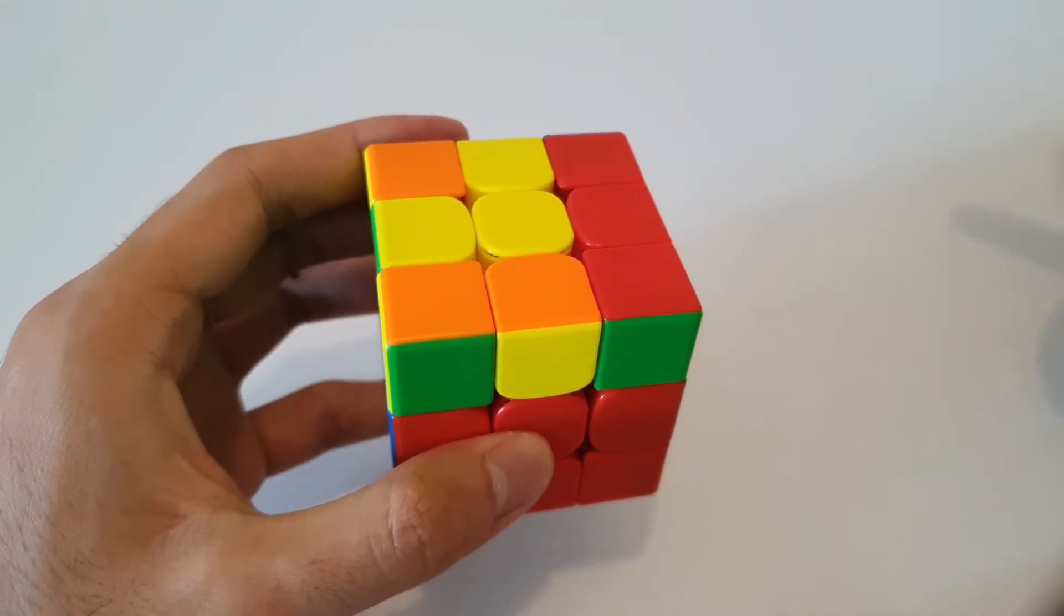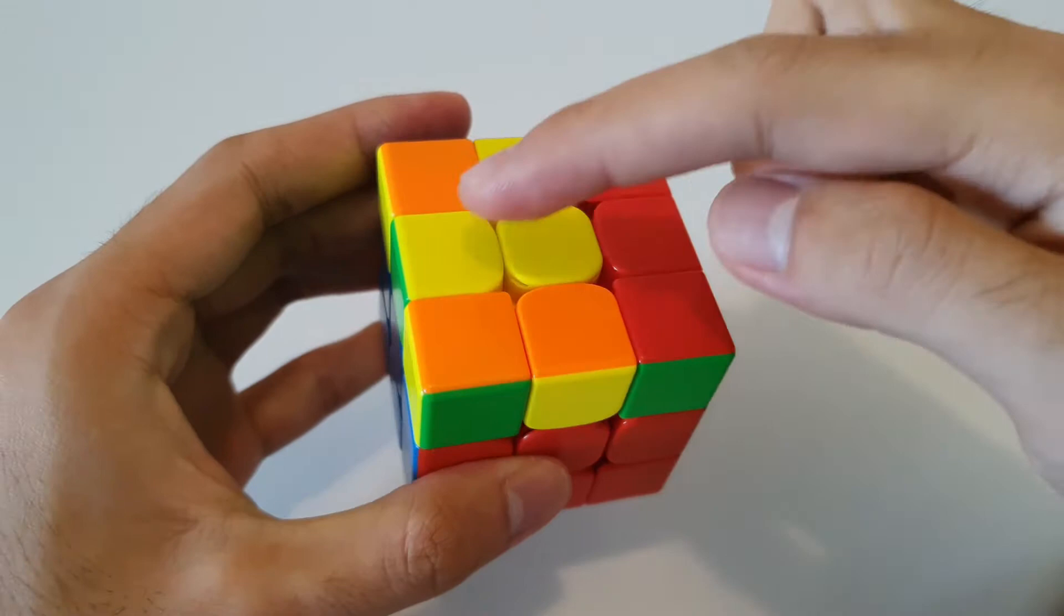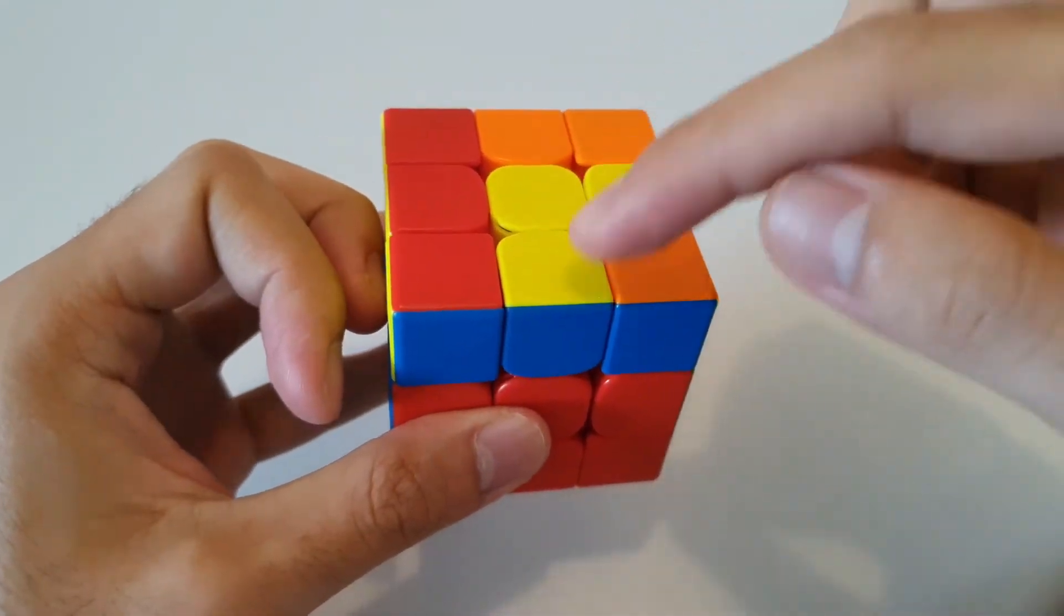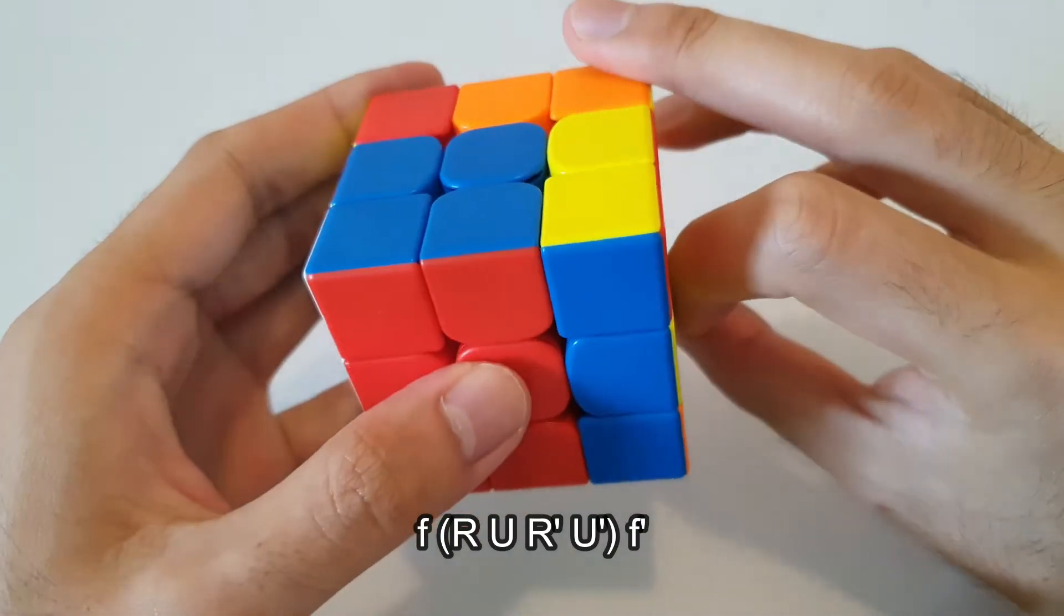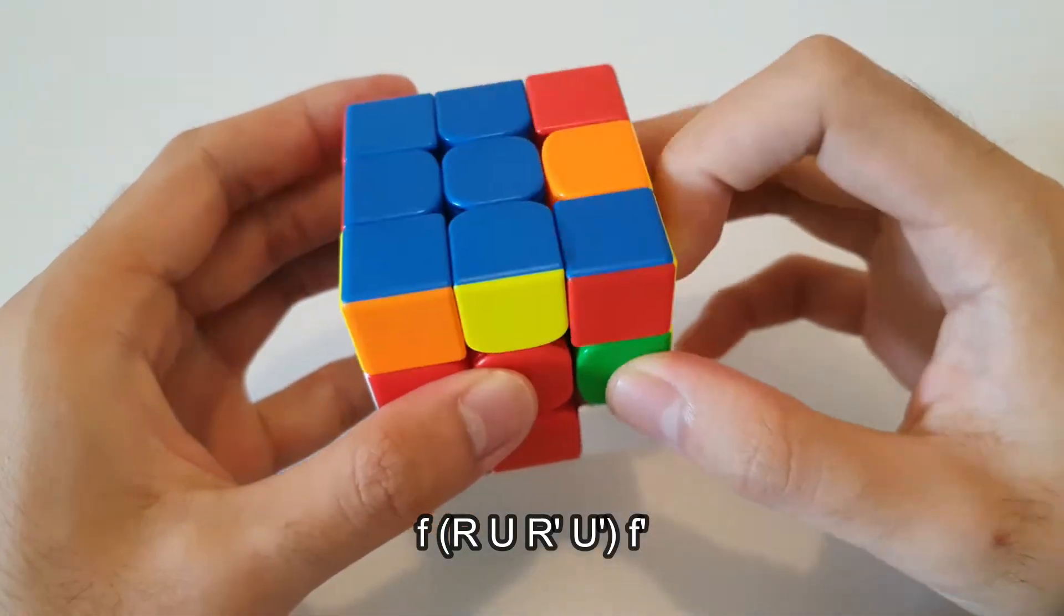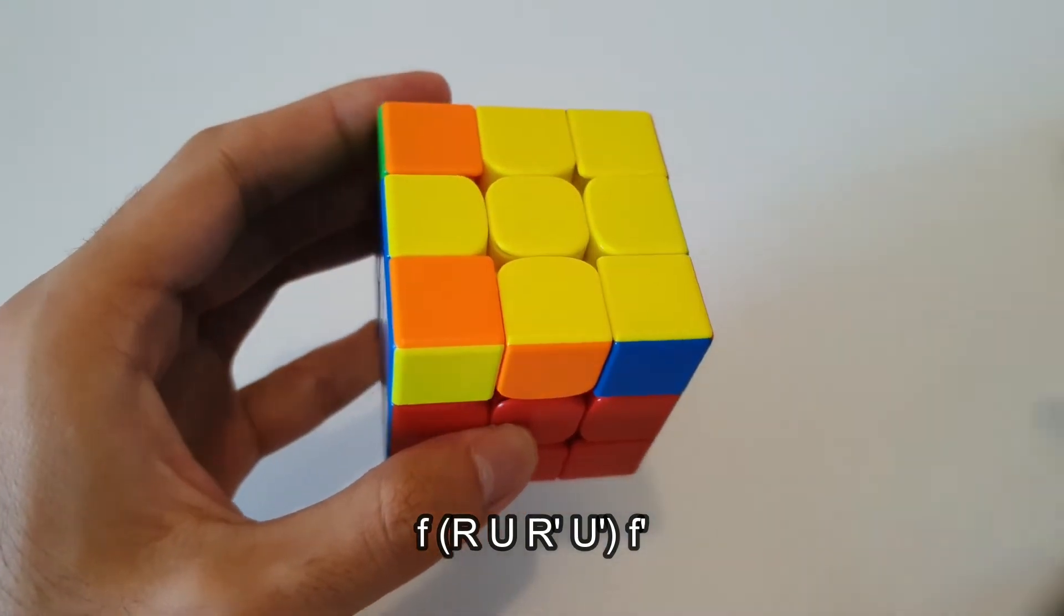However, there is an alternative way to solve this particular case. Another way to solve it is to hold this L shape at the front right hand side. And from this angle, you can do a wide F move, like this, and do sexy, followed by wide F', and that also creates the yellow cross on top.